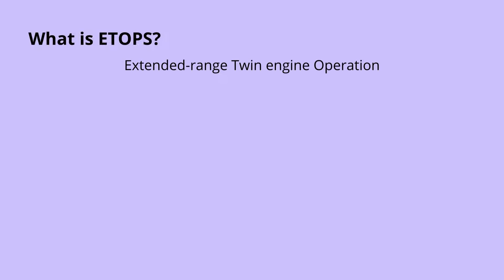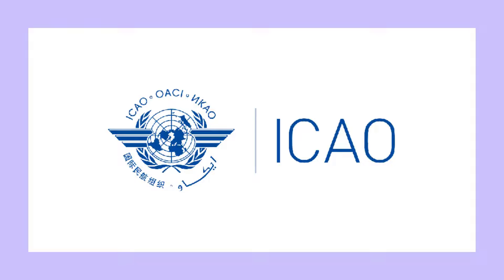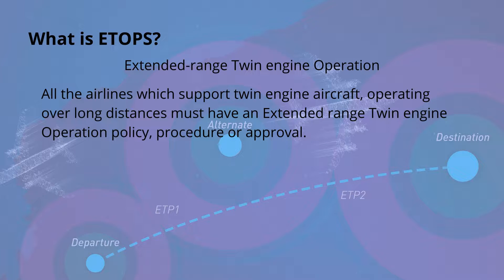ETOPS is an acronym for Extended Range Twin Engine Operation. According to ICAO, all airlines supporting twin engine aircraft operating over long distances must have an Extended Range Twin Engine Operation policy, procedure, or approval.